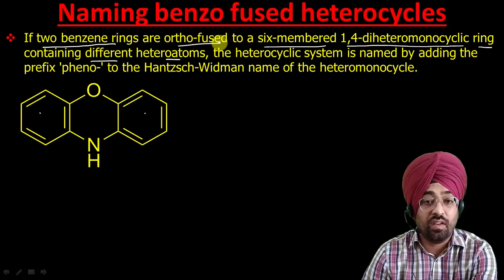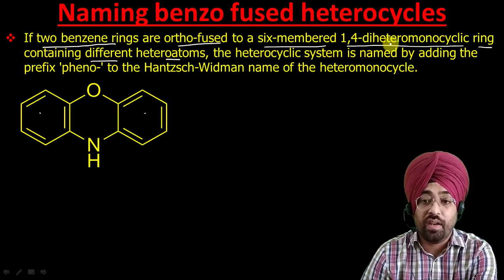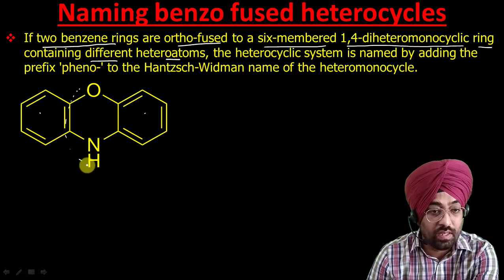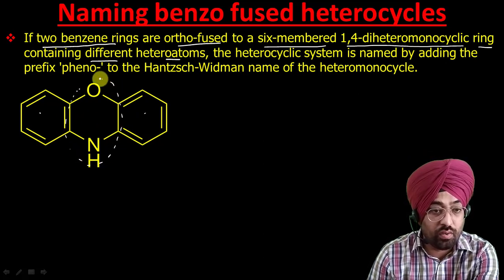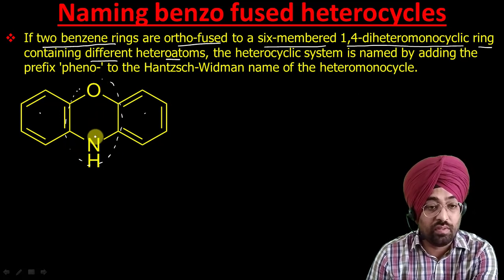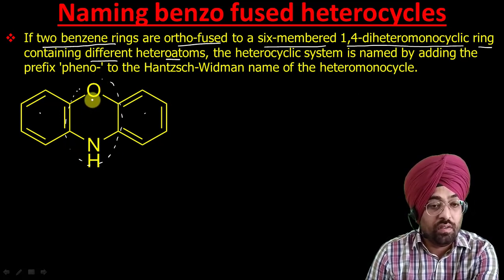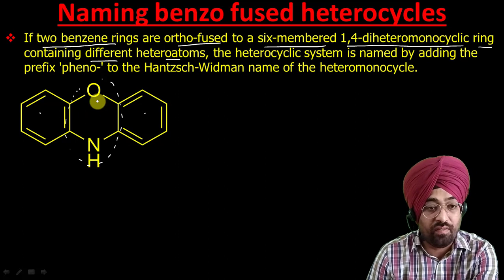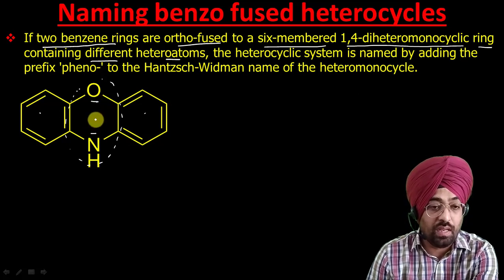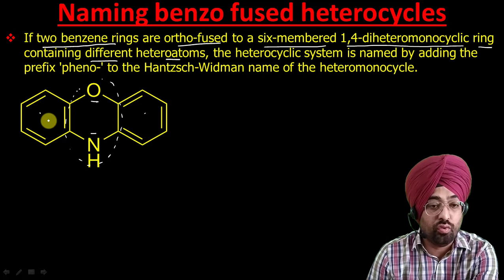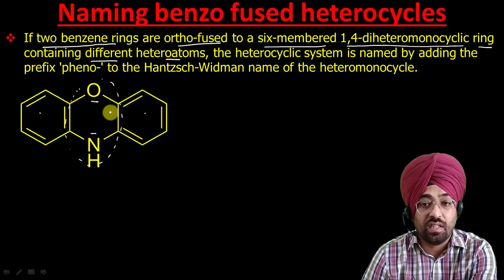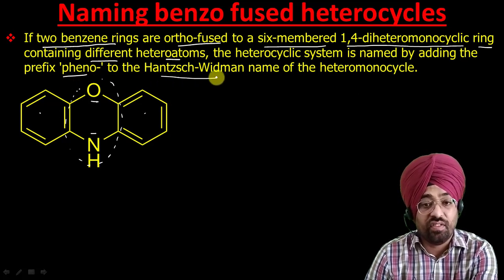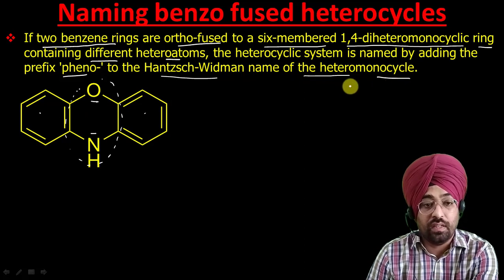Carefully look at this system: the heterocyclic ring is six-membered — one, two, three, four, five, six — and the hetero atoms are at the 1 and 4 positions, making it a 1,4-dihetero monocyclic ring. 'Di-hetero' means there are two different hetero atoms. If such a ring is ortho-fused to two benzene rings, then this system is named by adding the prefix 'pheno' to the Hantzsch-Widman name of the hetero monocycle.